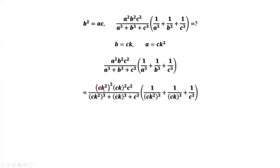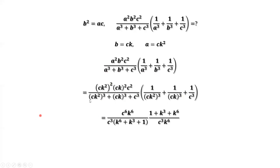So a equals c times k squared, and b equals c times k. Now we can simplify this part. For the numerator of the first part, we have c squared times c squared times c squared. Therefore, we have c to the power of 6. And for k: we have k squared, then squared is k to the power of 4, and here k to the power of 2. Therefore, we have k to the power of 6.